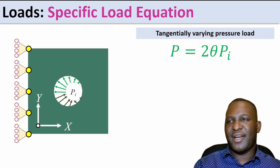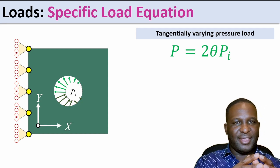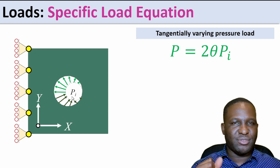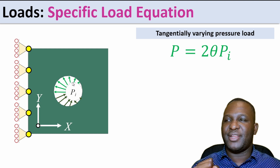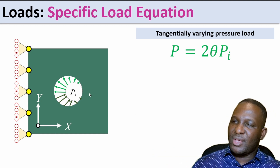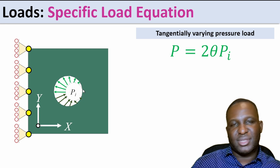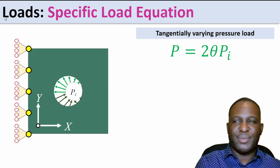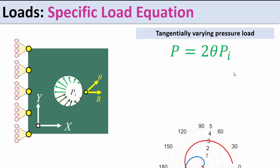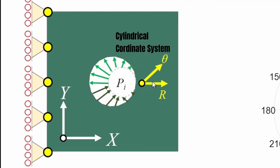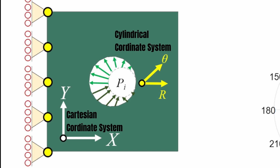The final loading type is a tangentially varying pressure load. Normally a pressure load expands radially, but here we want the pressure to change with angular direction as you move around the hole. Starting at zero pressure at 0°, it increases to maximum at 180°, then decreases back to zero at 360°. This is an unusual pressure formulation expressed as p(θ) = 2θ/π. Because we're working in a theta and radial coordinate system, we need a cylindrical coordinate system rather than a Cartesian x-y system.